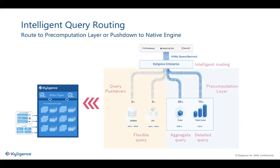Today I'm going to be showing you Snowflake connected to Excel. Snowflake does not natively support Excel, but you can use Kylogence to get you there — and you can use it with or without cubes. First I'm going to show you without a cube, demoing the query push-down, querying directly on Snowflake. Then I will enable my cube that I've already built and show you what it's like to query the cube — it'll be a lot faster. That's the pre-computation layer.